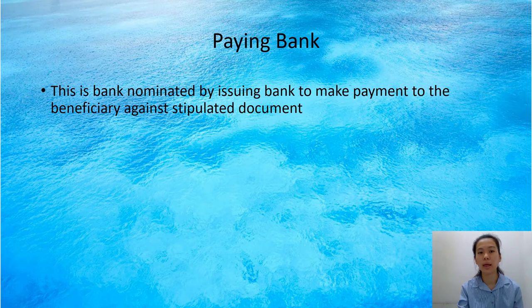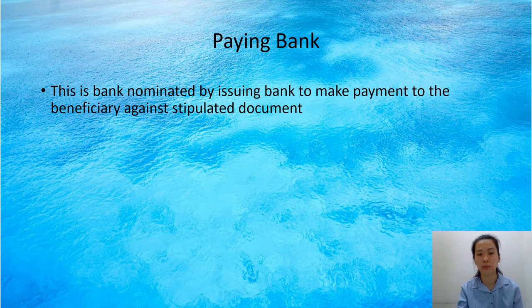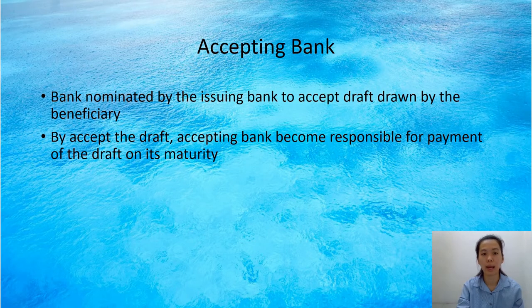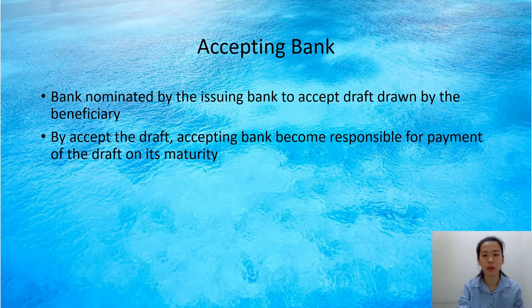For the paying bank, this is the bank nominated by the issuing bank to make payment to the beneficiary against stipulated documents, which may or may not include a draft — just as a bill of exchange. For the accepting bank, it is the bank nominated by the issuing bank to accept a draft drawn by the beneficiary, provided the documents tendered are in conformity with the credit. By accepting the draft, the accepting bank becomes responsible for payment of the draft on its maturity.